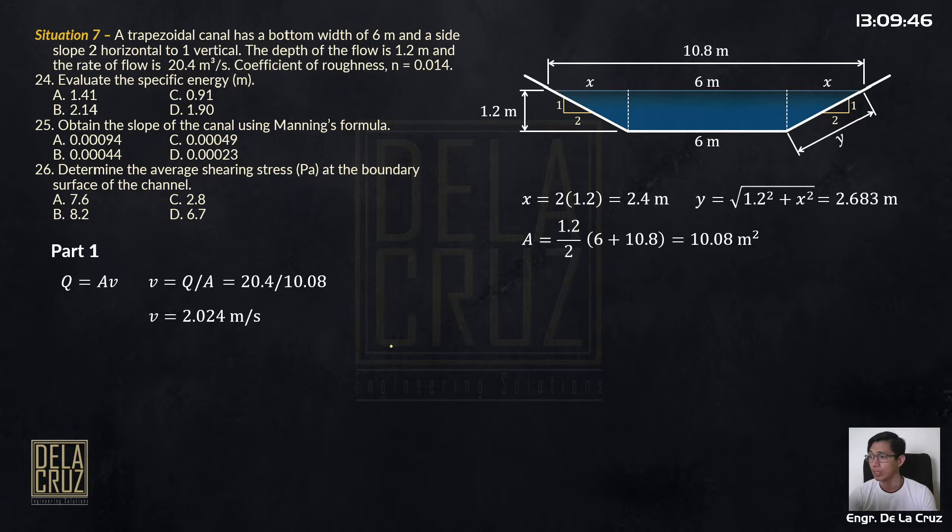The area is 10.08. So we'll get the velocity. And we can now solve for the specific energy. This is the formula. The static head because open channel flow.